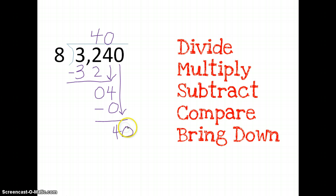Now, 8 will go into 40 five times. 5 times 8 is 40. I'm going to subtract. I'm going to end up with 0.